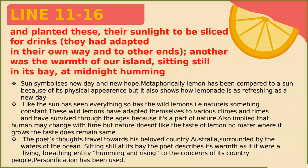"And planted their sunlight to be sliced for drinks. They had adapted in their own way and to their own ends." The lemon has been compared to the sun — the sun symbolizes a new day and new hope. Metaphorically, lemon is compared to the sun because of its physical appearance, and it also shows how lemonade is a refreshing, new drink. They have adapted in their own way, referring to the lemon now growing in every part of the world. Similarly, Australians have settled in every part of the world, but their identity hasn't changed — they may have adapted to their environment, but their basic crux, the sourness, cannot be detached.